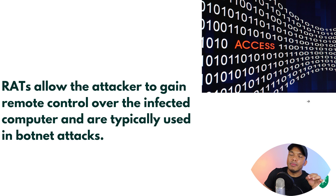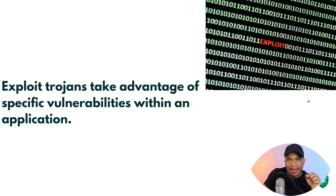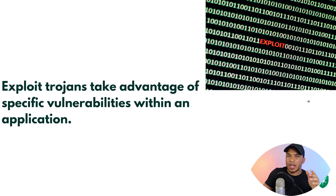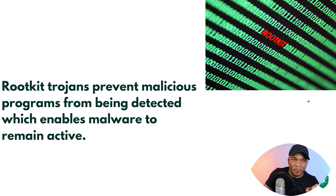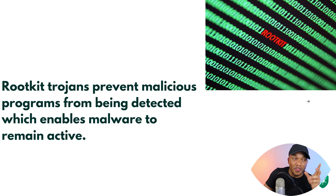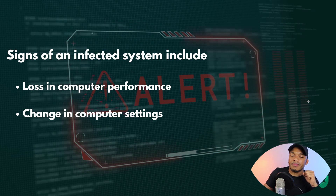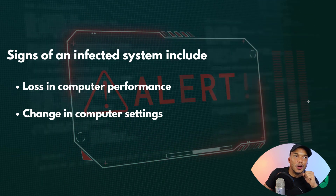Next are RATs — Remote Access Trojans — which allow the attacker to gain remote control over the infected computer and are typically used in botnet attacks. Then there are Exploit trojans, which take advantage of specific vulnerabilities within an application, being programmed to target apps with known weaknesses. Finally, Rootkit trojans are very nasty because they prevent malicious programs from being detected, allowing malware to remain active by disabling the anti-malware's ability to recognize malicious programs.